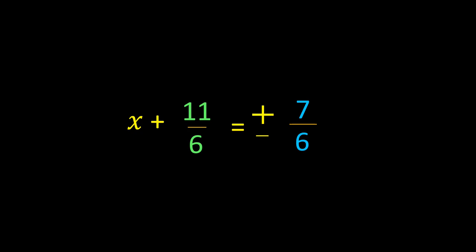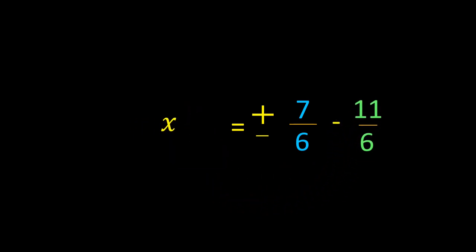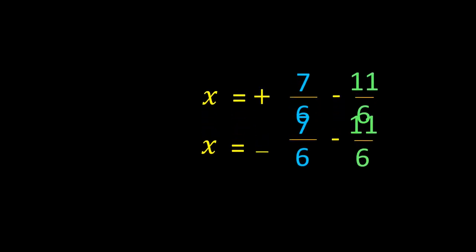Now, to find the value of x, we are transferring 11/6 from the LHS to the RHS. When we transfer 11/6 to the RHS, it becomes -11/6. Now we have ±7/6 - 11/6 on the RHS.